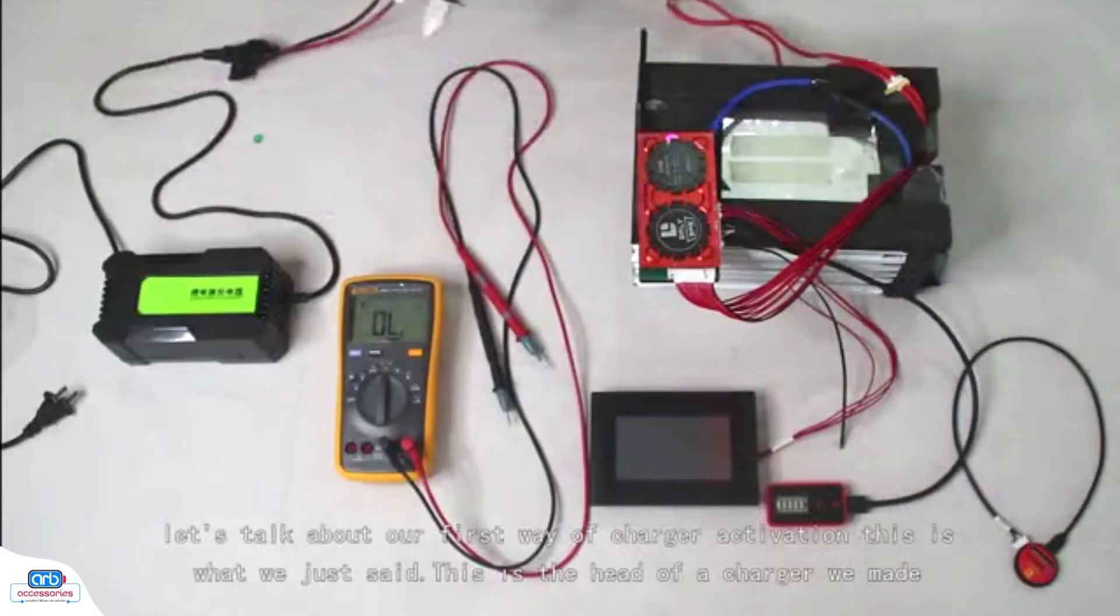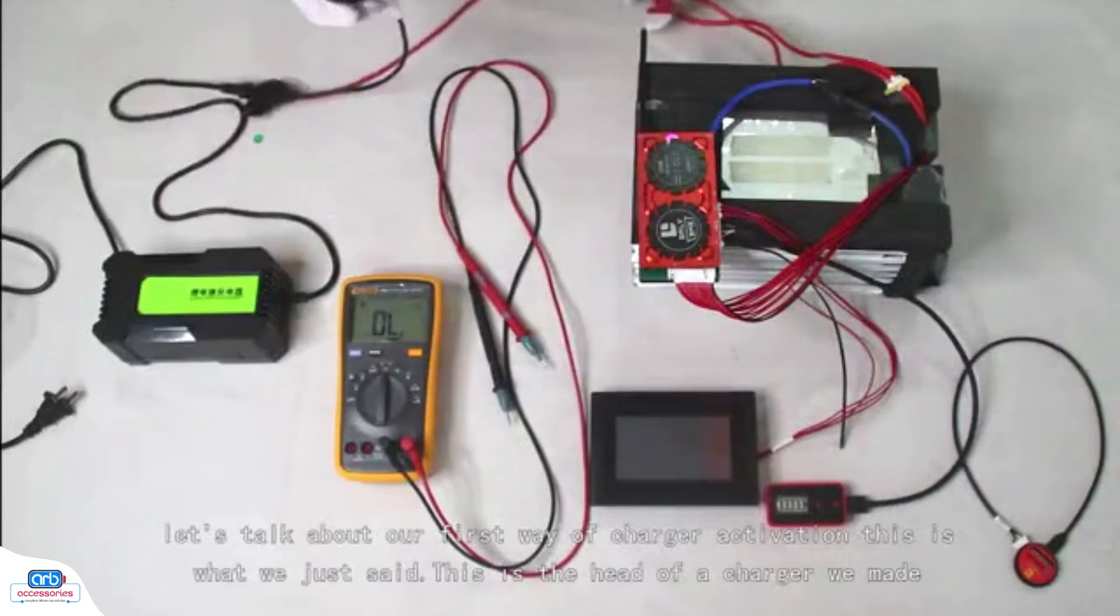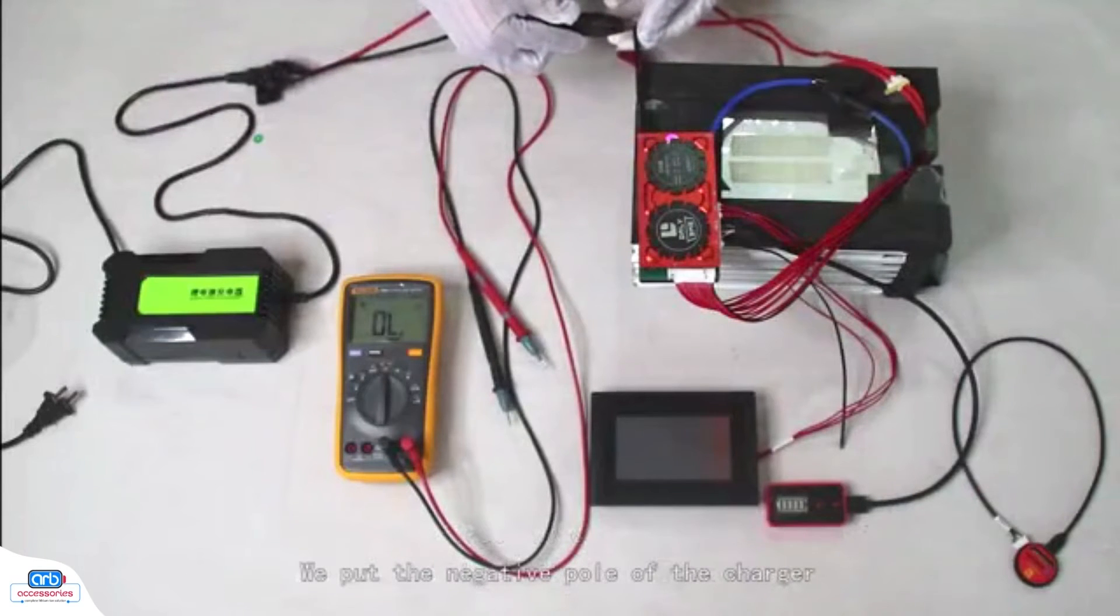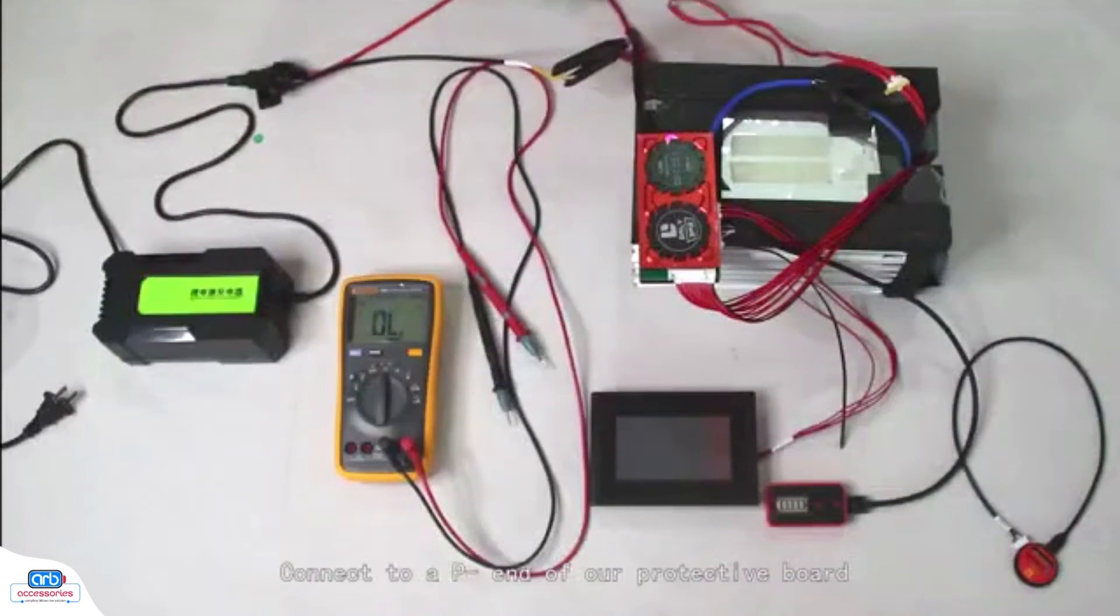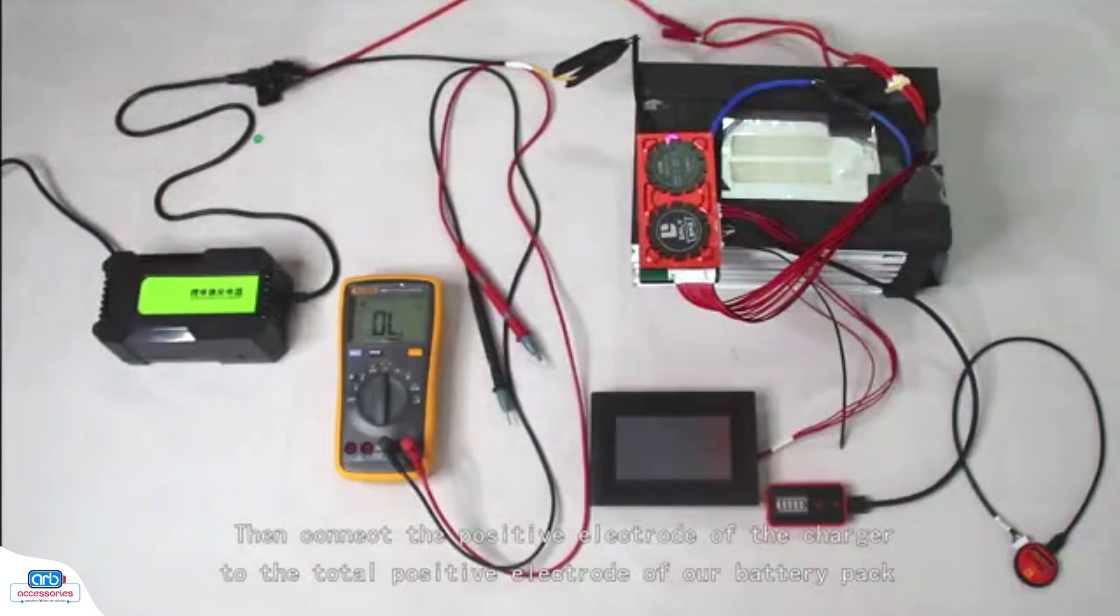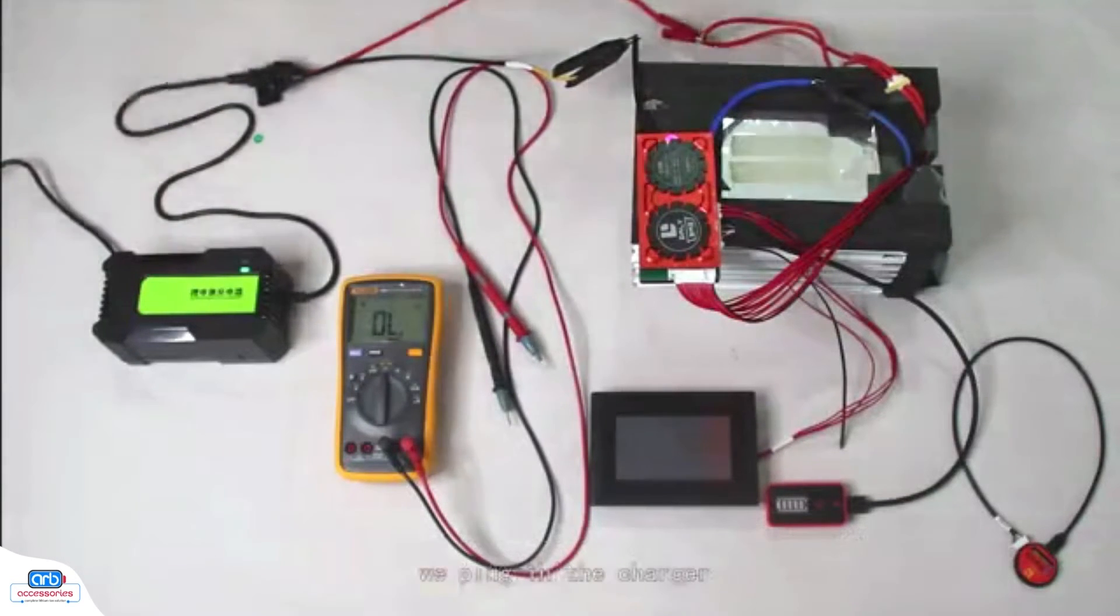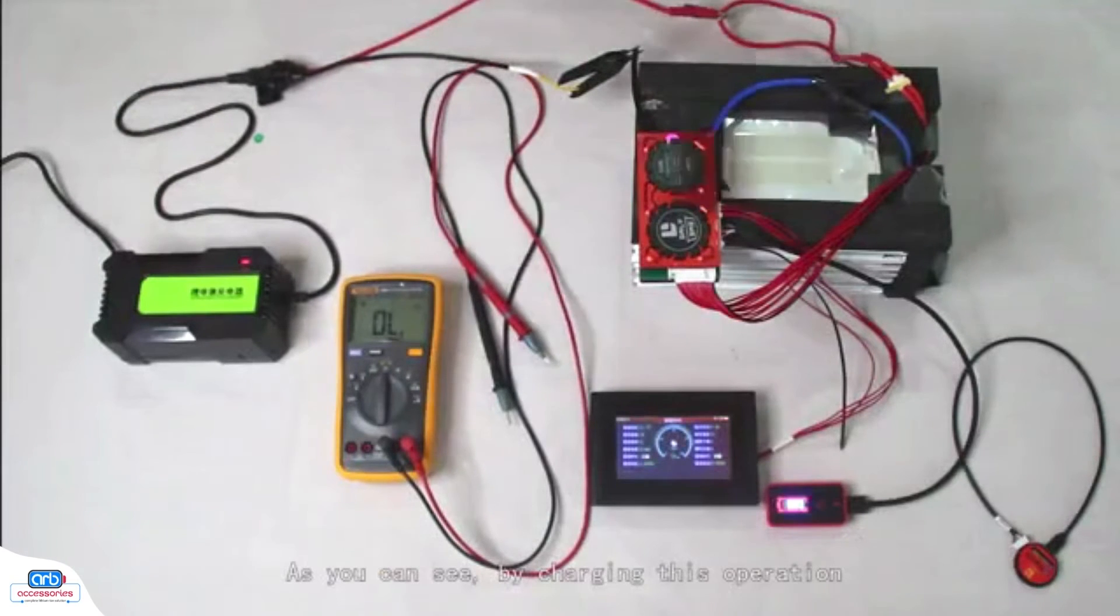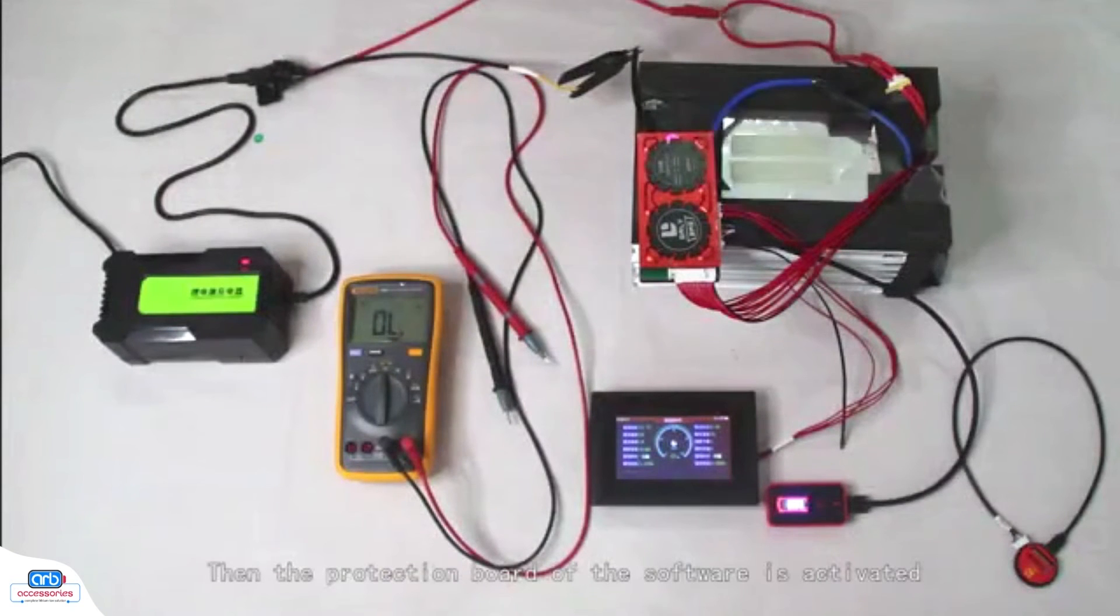First, let's talk about our first way of charger activation. This is the head of a charger we made. This is the negative pole of the charger. We put the negative pole of the charger, connect to the P end of our protective board. Then connect the positive electrode of the charger to the total positive electrode of our battery pack. At this time, we plug in the charger. As you can see, by charging this operation, the protection board of the software is activated.